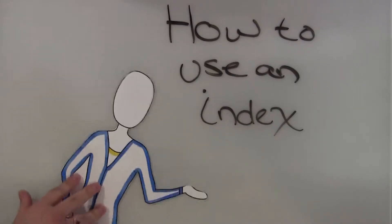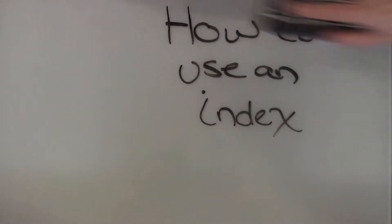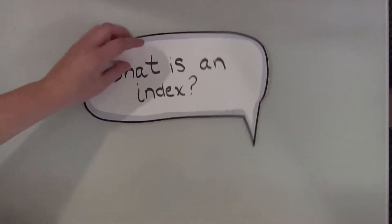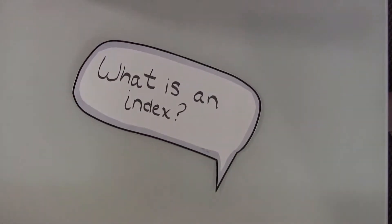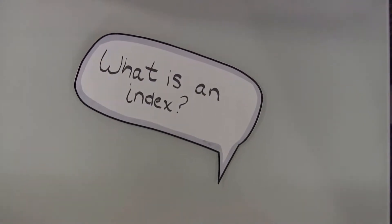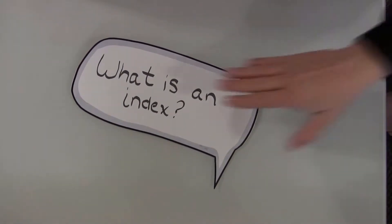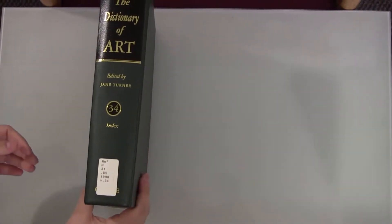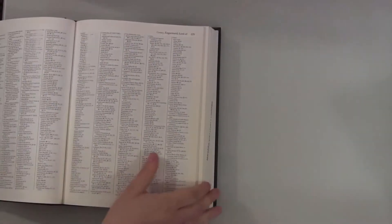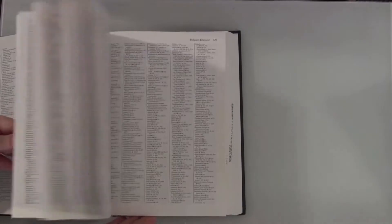How to use an index. What is an index? An index is your best friend for helping you quickly find what you're looking for within a book. It is an alphabetical listing of subjects found in an informational book, along with the page numbers on which those subjects can be found. An index is usually found at the end of the book.